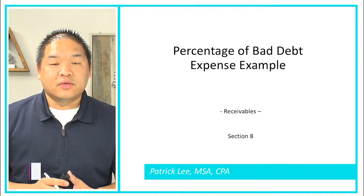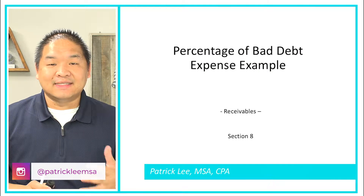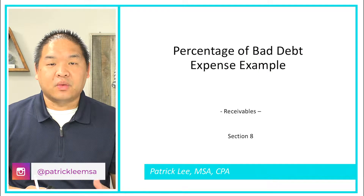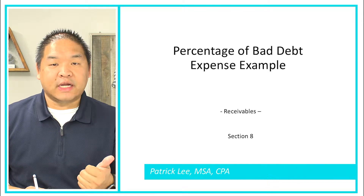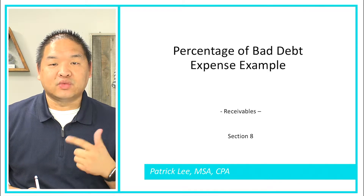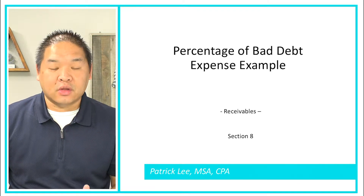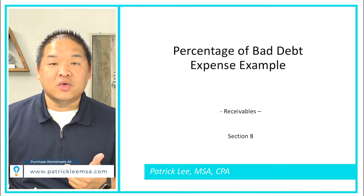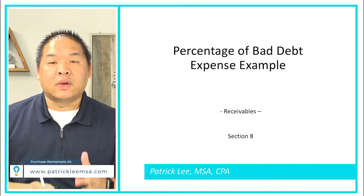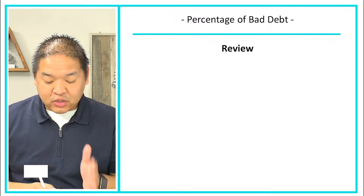In this lesson, we're going to walk you through a percentage of bad debt example. We're going to walk you through an understanding of what we're trying to do, as well as what that journal entry is going to look like. So let's take a look at a review of what we already know about the percentage of bad debt.